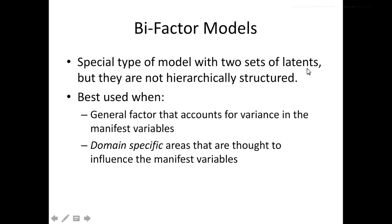So they're best used when you have a general factor that accounts for the variance in the manifest variable. So you really do want it to be significant all on the generalized side. And then after controlling for that, what happens in these domain specific areas that influence those manifest variables.